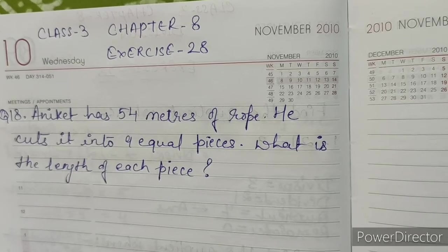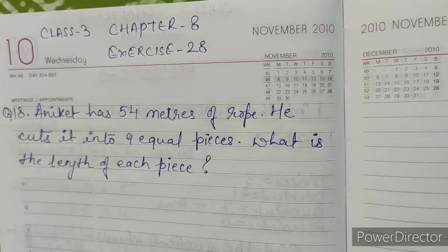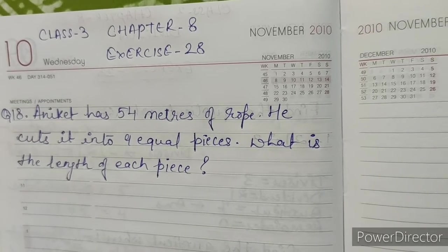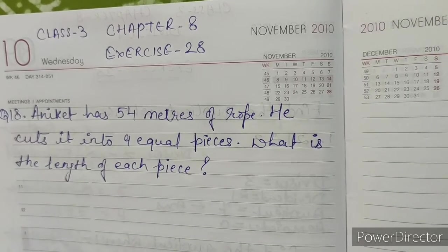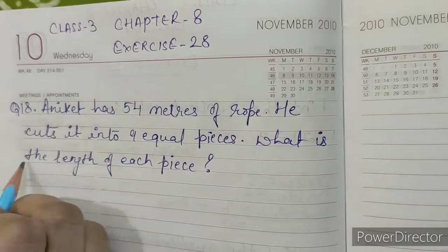Question number 18: Aniket has 54 meters of rope. He cuts it into 9 equal pieces. What is the length of each piece? Solution.